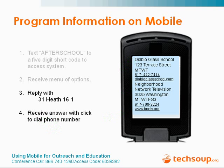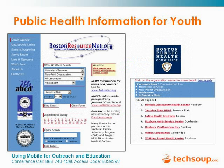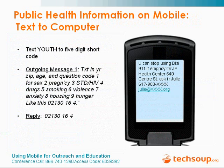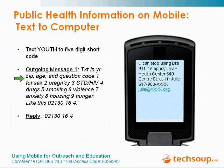The next service is a public health information system. Using data that already exists at BostonResourceNet.org or from partners at the Boston Public Health Commission, we'll be putting a wide range of public health information on mobile using a similar interface. Users would text 'youth' to that same five-digit shortcode and get a menu of options. We're going to be testing this to make sure it's the right interface to use with youth. The system will ask people to text in their zip code rather than their exact location — we don't want to give the impression that we're tracking their address — along with their age and a question code or area of interest.